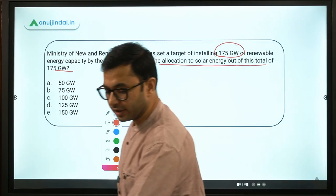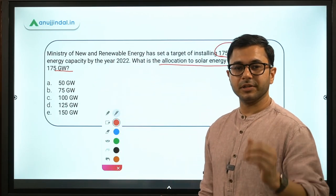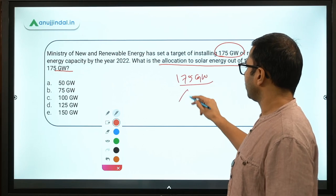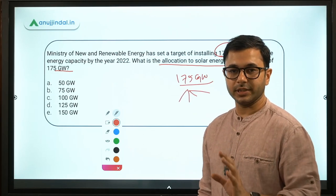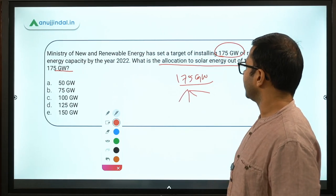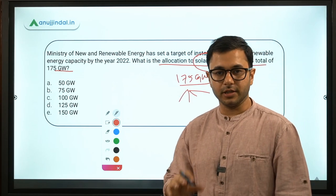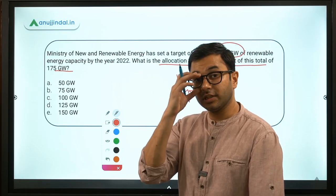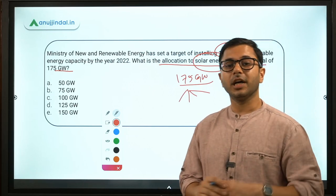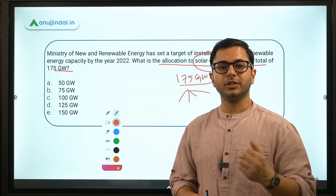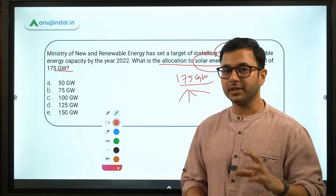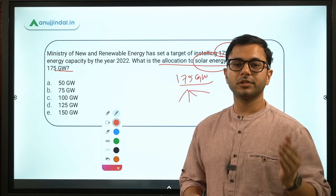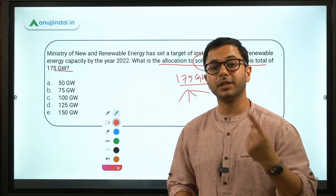I had told you in the previous session the allocation to different sectors in terms of installed capacity. In this question, we only need the allocation to solar energy. You can write your answers on a piece of paper and at the end of the session put your score in the comments section below, so that you can compare your score and progress with others. That will be a very good method of comparing your performance, because at the end of the day the exam is relative.